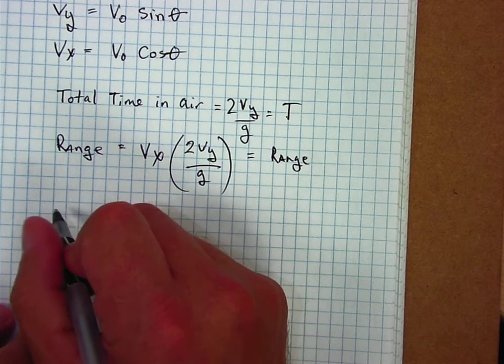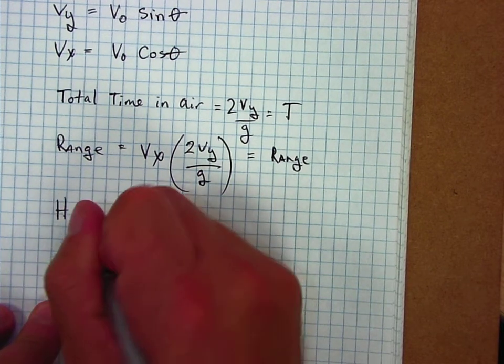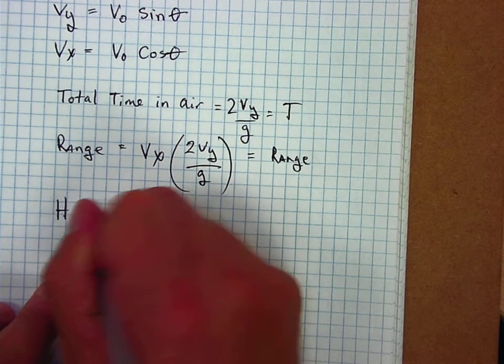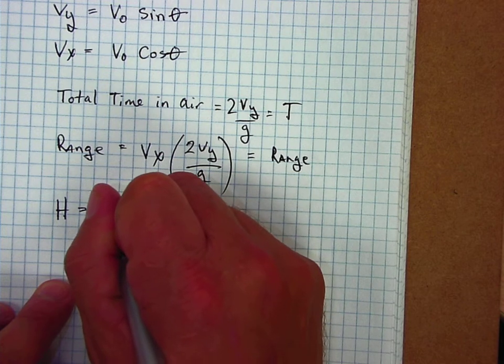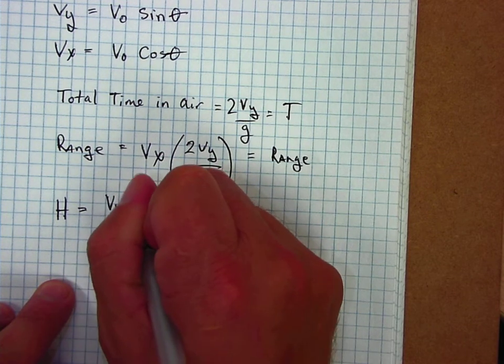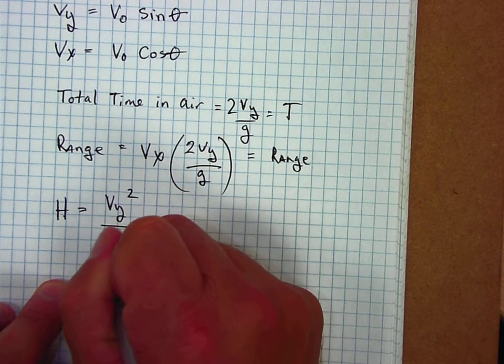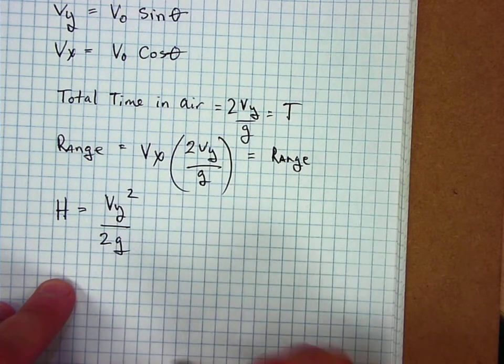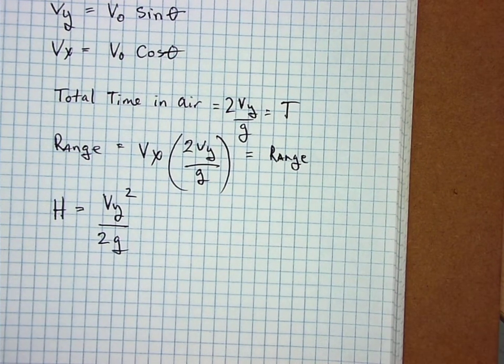Height is going to be equal to v_y squared over 2 times gravity. That should take care of most of the problems you have.